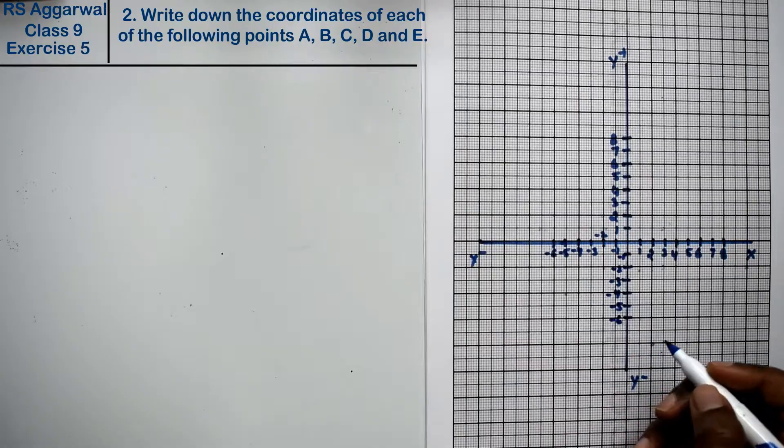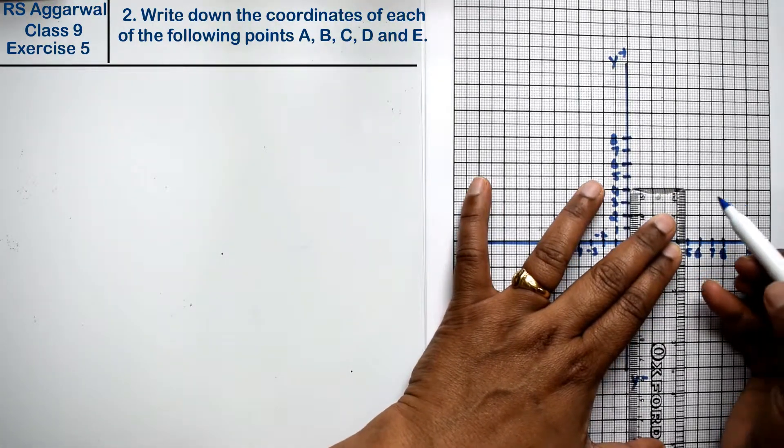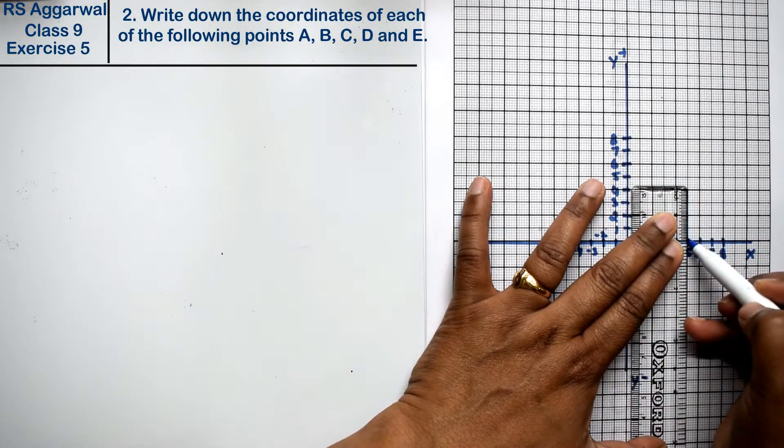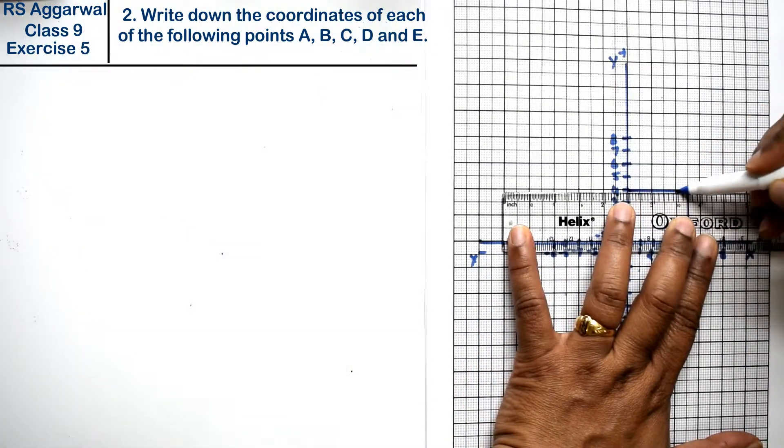So the first point is 5 and 4. It's going on to the right, 1 here and 4.